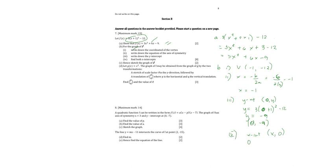0 equals 3x² + 6x - 9. So we can have 3x² + 6x - 9.